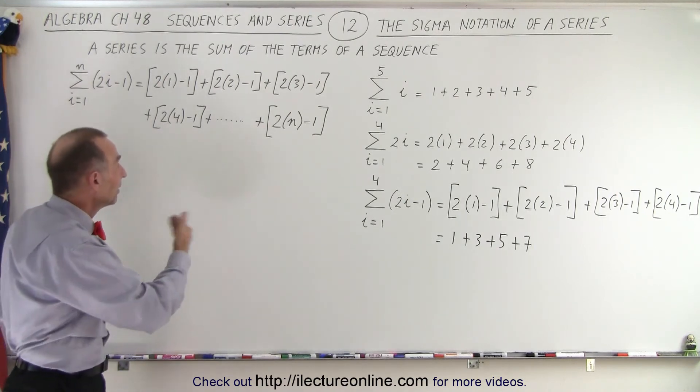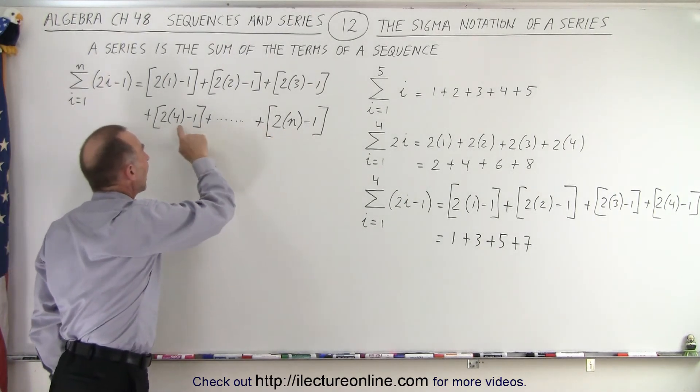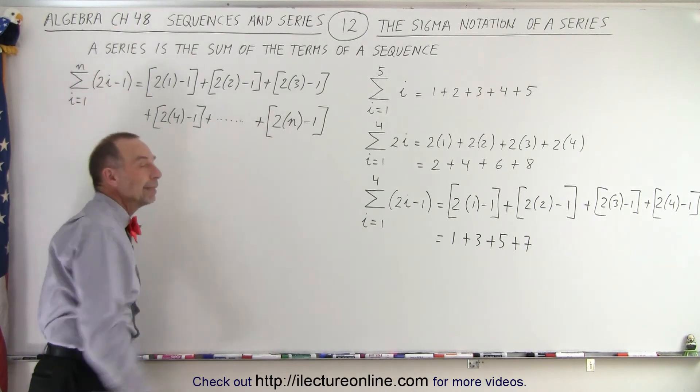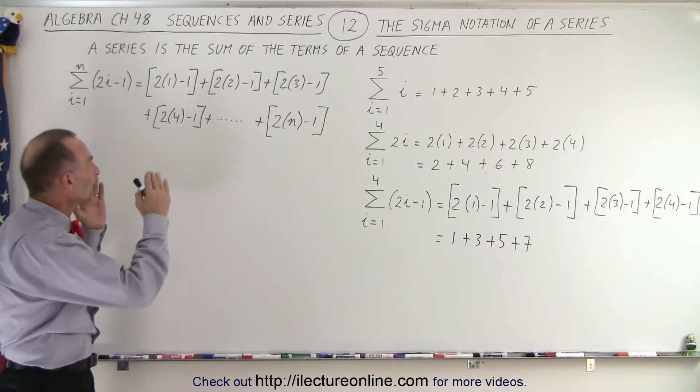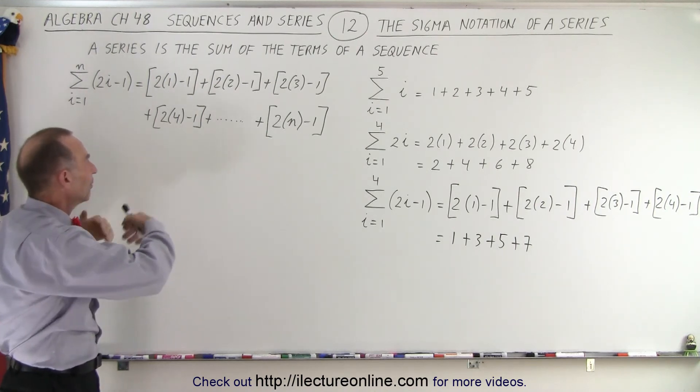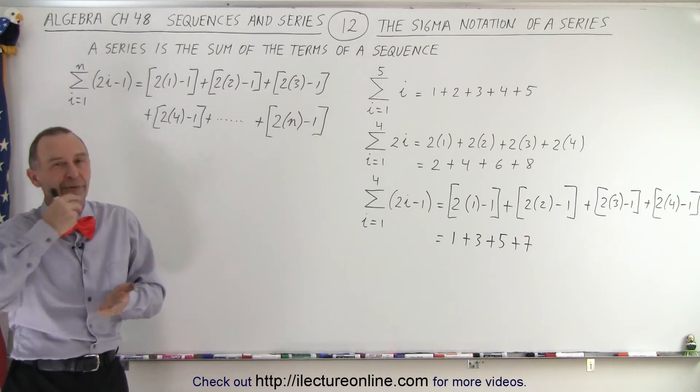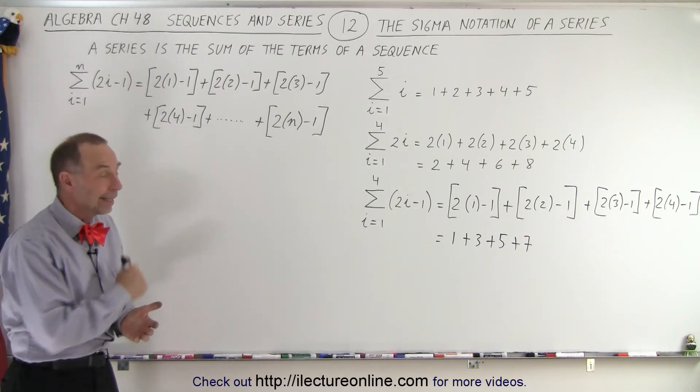So you can see that clearly this is the last term when i is replaced by the value for n where n can be any value and that's a more general way of writing that summation symbol. If we don't know what the upper limit is or if we want the upper limit to be any number represented by n and that is how it's done.